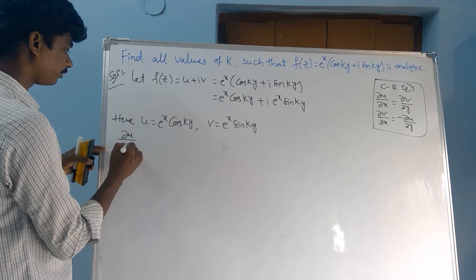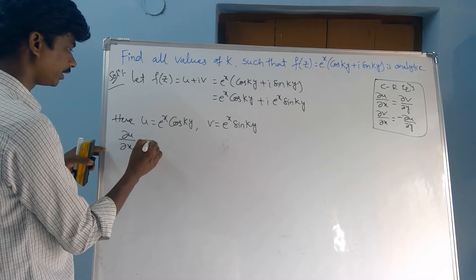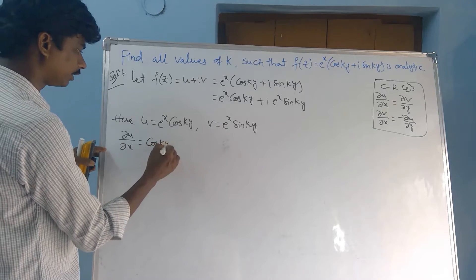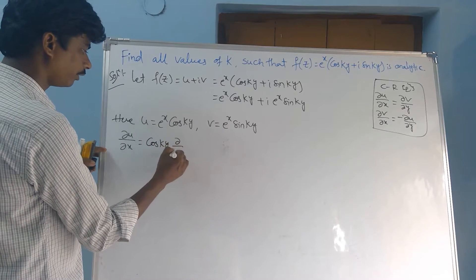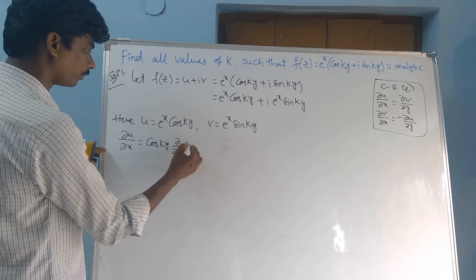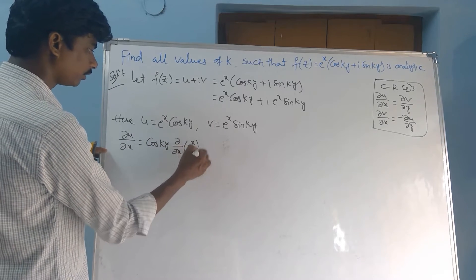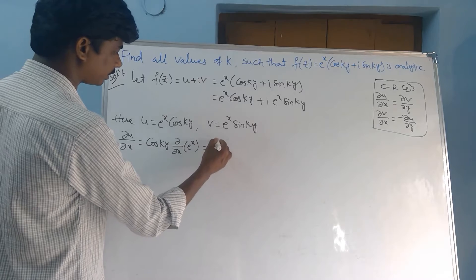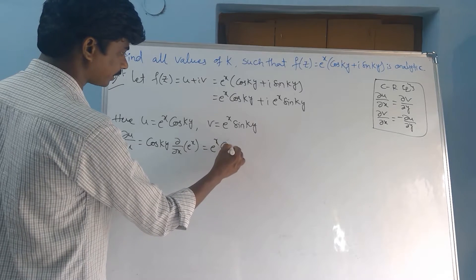First we find ∂u/∂x. Since cos(ky) is a constant with respect to x, we differentiate e^x with respect to x. So ∂u/∂x = e^x · cos(ky).